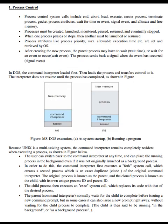Process control system calls include end, abort, load, execute, create process, terminate process, get/set process attributes, wait for time or event, signal event, and allocate and free memory. Processes must be created, launched, monitored, paused, resumed, and eventually stopped. When one process pauses or stops, another must be launched or resumed. Process attributes like process priority, maximum allowable execution time, etc. are set and retrieved by the OS. After creating a new process, the parent process may have to wait for time or for an event to occur; the process sends back a signal when the event has occurred.